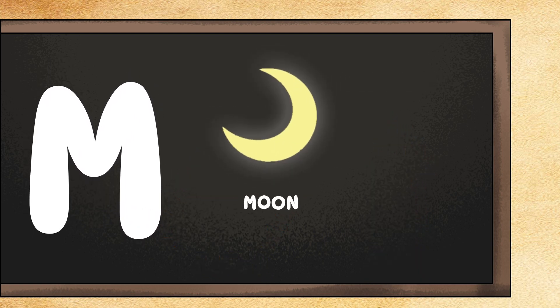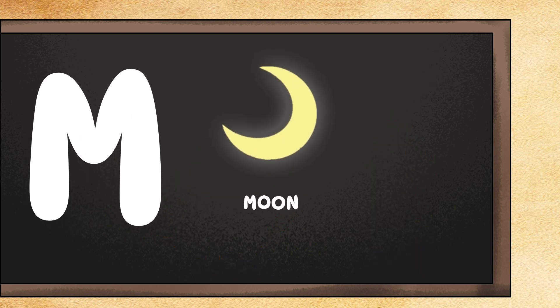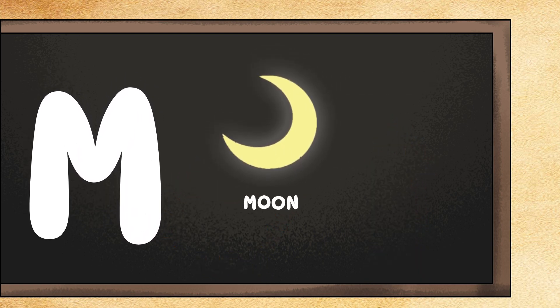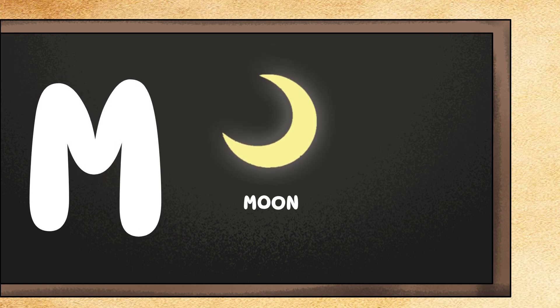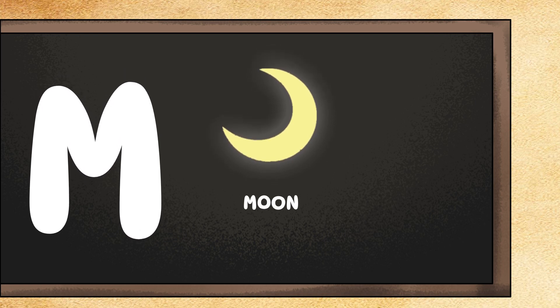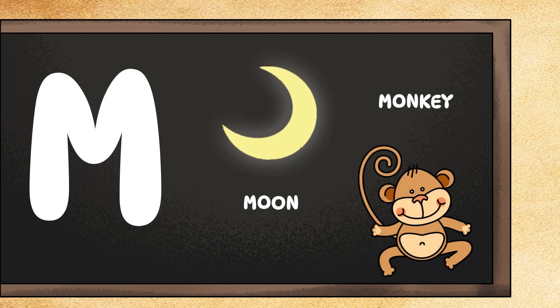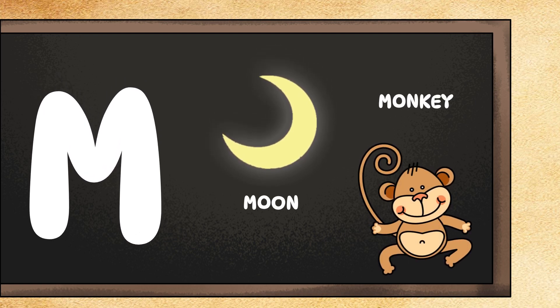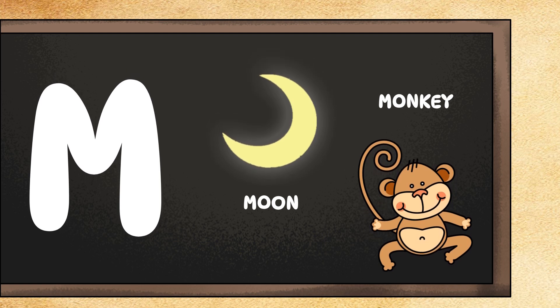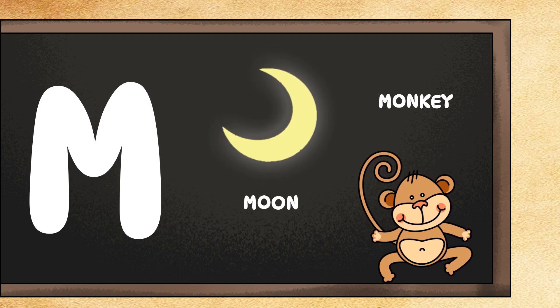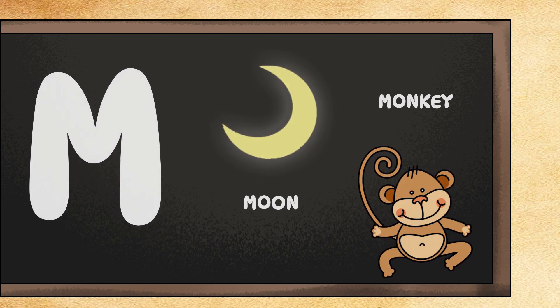M is for moon. Can you make a crescent moon shape with your arms? Beautiful! M is also for monkey. Can you swing your arms like a playful monkey? Ooh ooh ah ah!